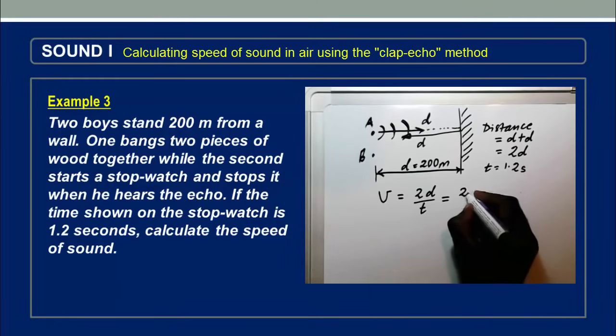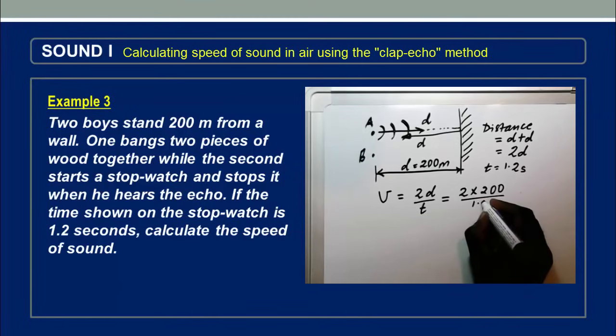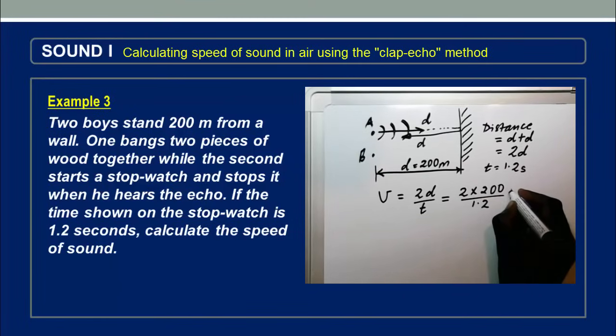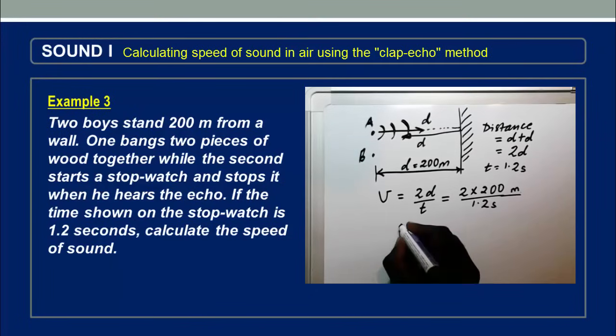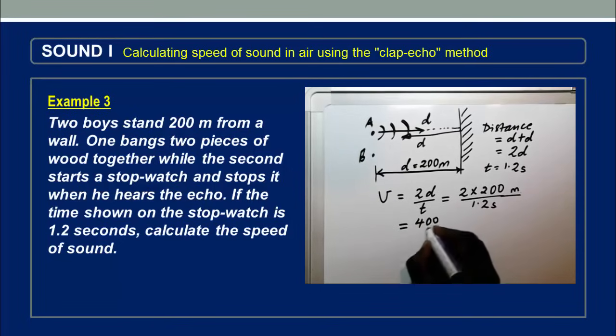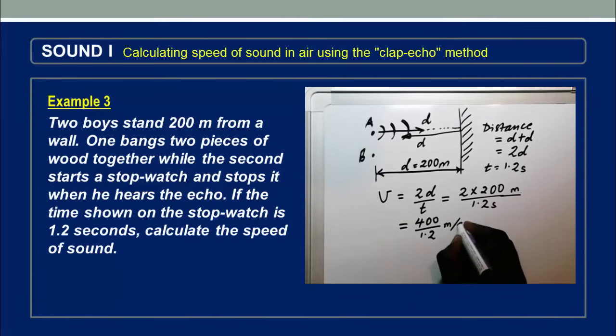So this is going to be 2 times 200, divided by 1.2. And of course this one is meters, and this is seconds. So we are going to have 400 divided by 1.2, of course meters per second. Now let's use the calculator to see what this gives us.